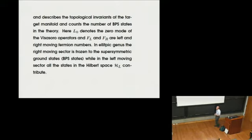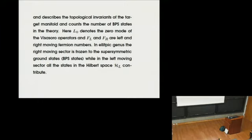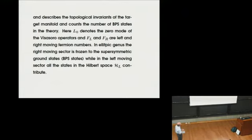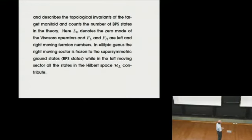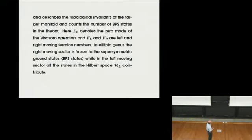The elliptic genus is known to describe a collection of topological invariants — an infinite number of topological invariants of the manifold. In physics terminology, it counts the number of so-called BPS states of the theory, a particular type of state which plays a very basic role. Here, L0 and L0-bar are the zero-mode operators, and FL and FR are the left and right moving fermion numbers. In the elliptic genus, the right-moving sector is frozen to the supersymmetric ground state, while in the left-moving sector all states in the Hilbert space contribute — so we have to sum an infinite number of states.